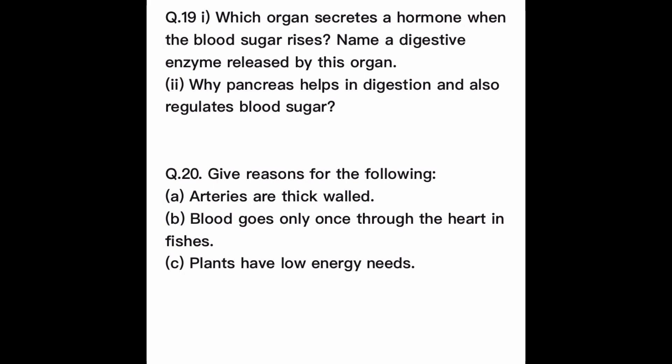Question number 20: Give reasons for the following. Number 1, arteries are thick-walled — because arteries carry oxygenated blood and the blood flows rapidly, the walls are thick. Number 2, blood goes only once through the heart in fishes — because fish have a two-chambered heart with one auricle and one ventricle, so there is only single circulation. Number 3, plants have low energy needs — because plants are fixed to their position and do not move, their energy requirement is low compared to animals.